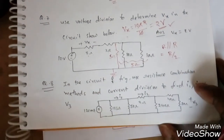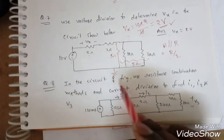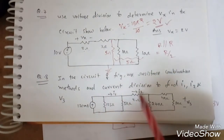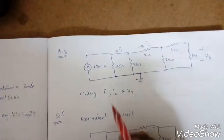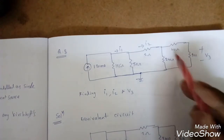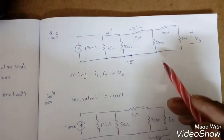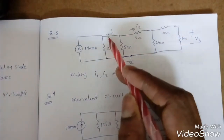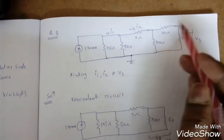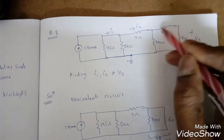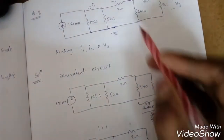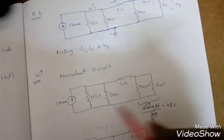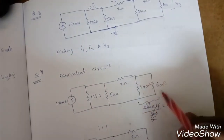The next question asks us to use resistance combination and current division to find I1, I2, and V3. The circuit has 125 ohms, 250 ohms, 240 ohms, 40 ohms, and 20 ohms. To simplify, 40 ohms and 20 ohms in series give 60 ohms. Then 60 ohms in parallel with 240 ohms gives (240 × 60) / (240 + 60) = 48 ohms.